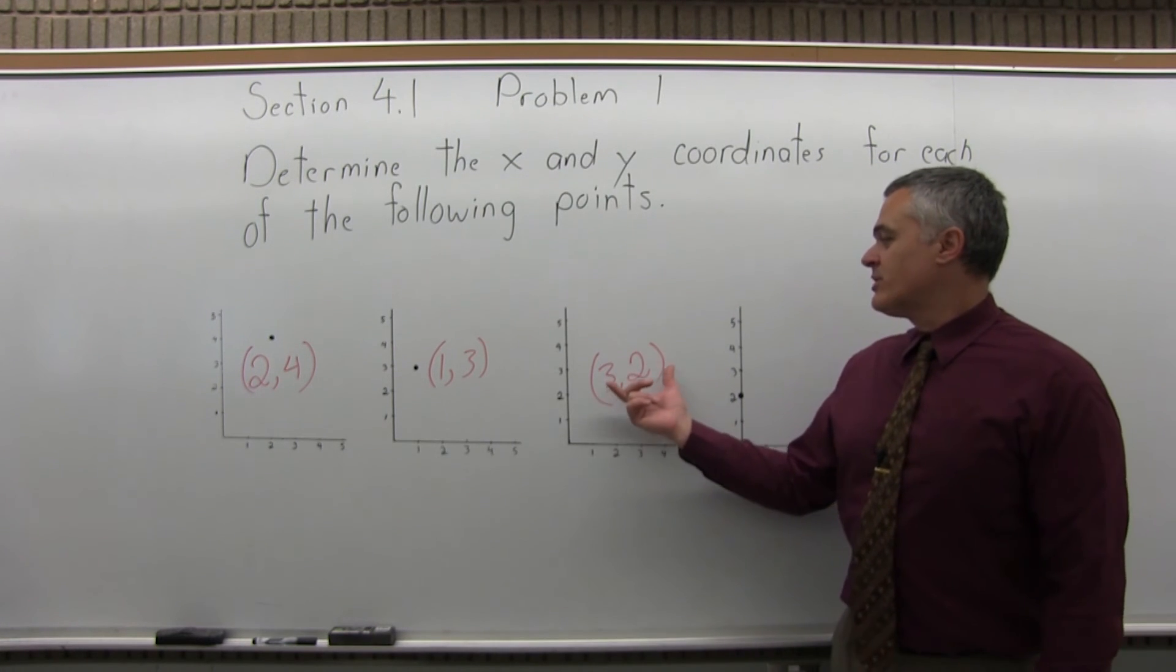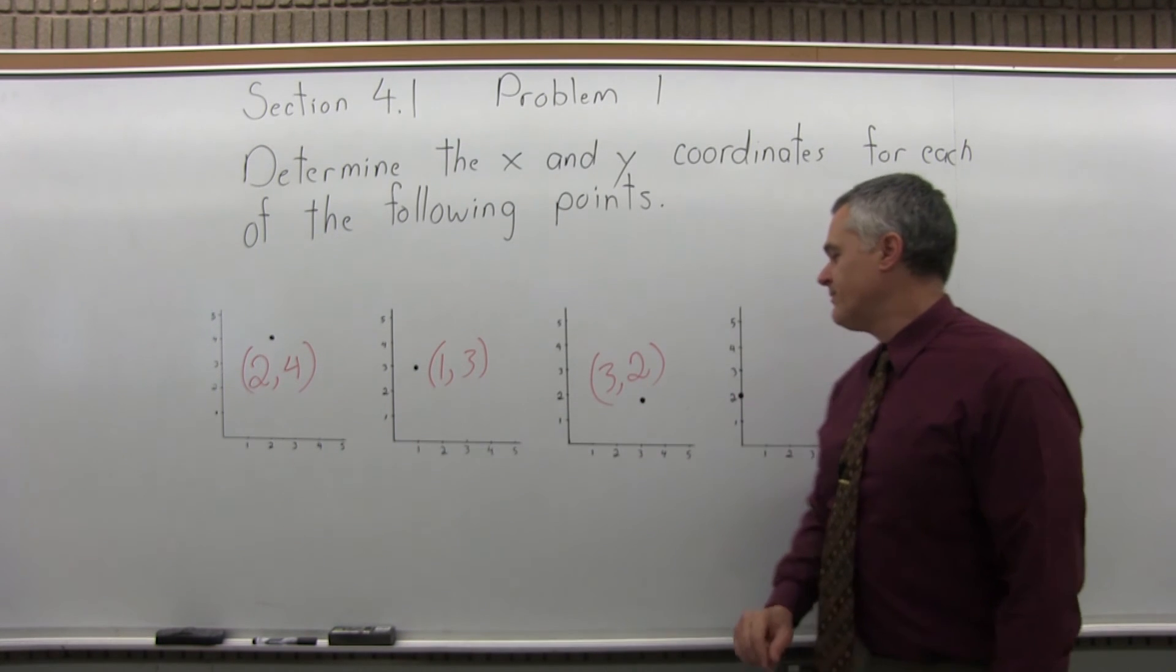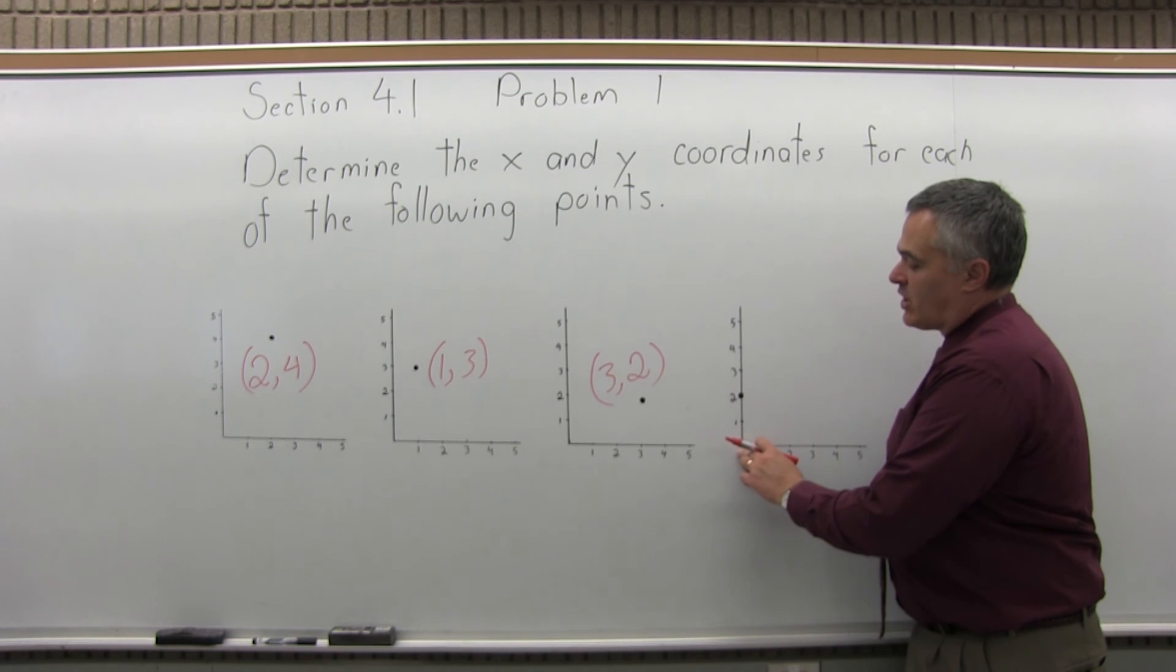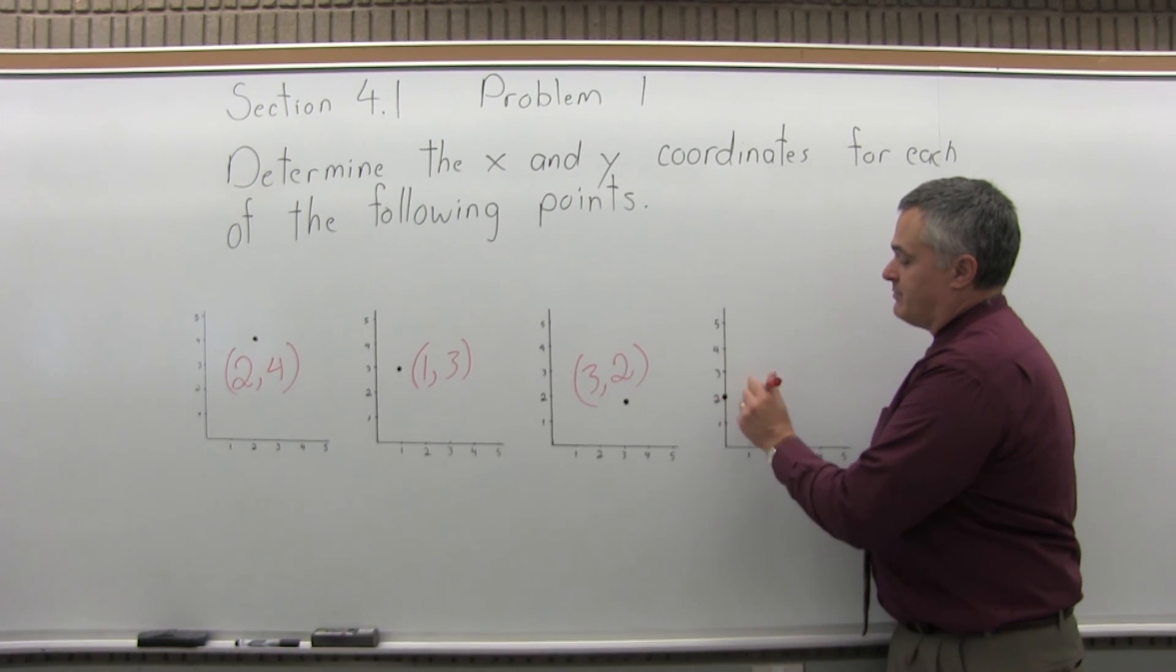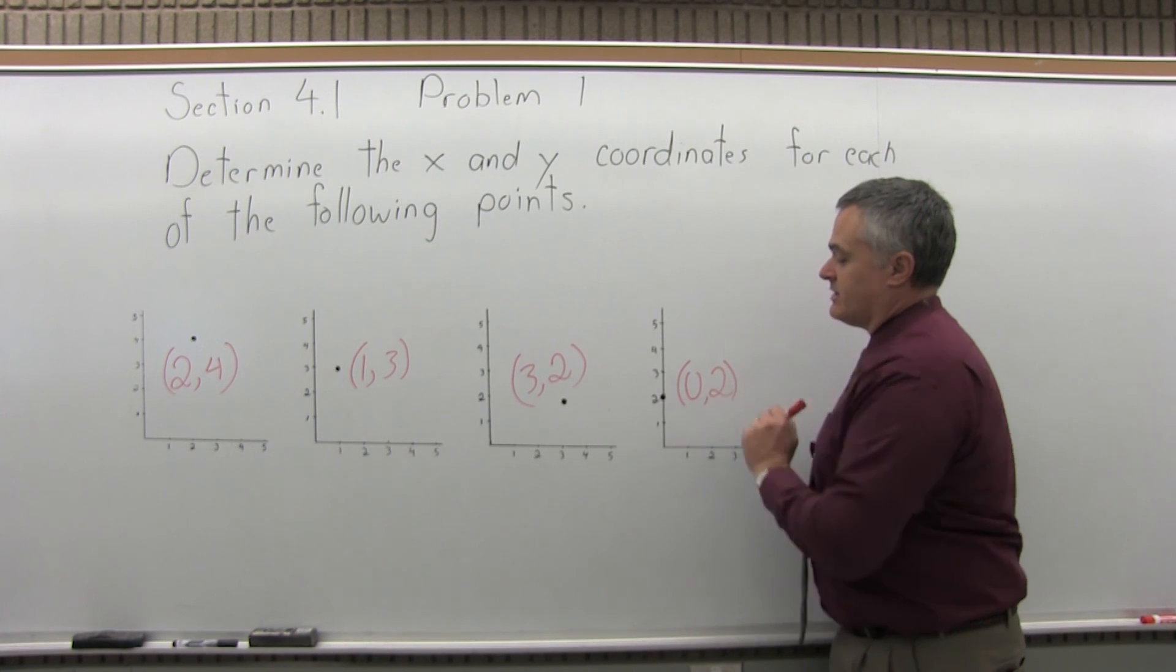Again, each point, the correct notation is to put it in parentheses with a comma in between the two. And the last one, it's right on the vertical line. So we've gone over 0 up 2. The x-coordinate is 0 and the y-coordinate is 2. Thank you.